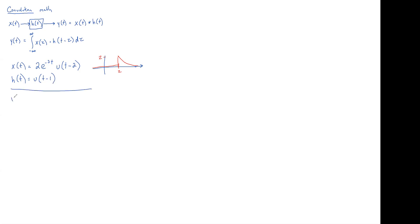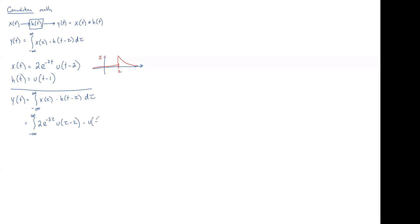We can set up our answer: the output y(t) is the integral from negative infinity to infinity of x(τ) times h(t-τ) dτ. Since x(t) is 2e^(-3t)u(t-2), x(τ) is the exact same with every t replaced by τ. We multiply by h(t-τ): every t in our impulse function is replaced with t-τ, giving u(t-τ-1), all dτ.